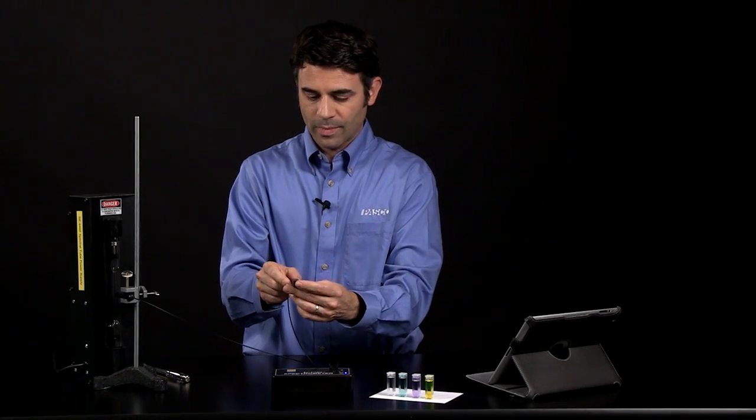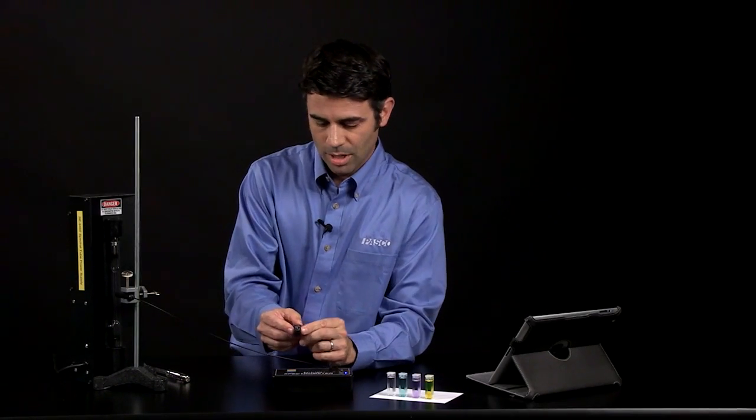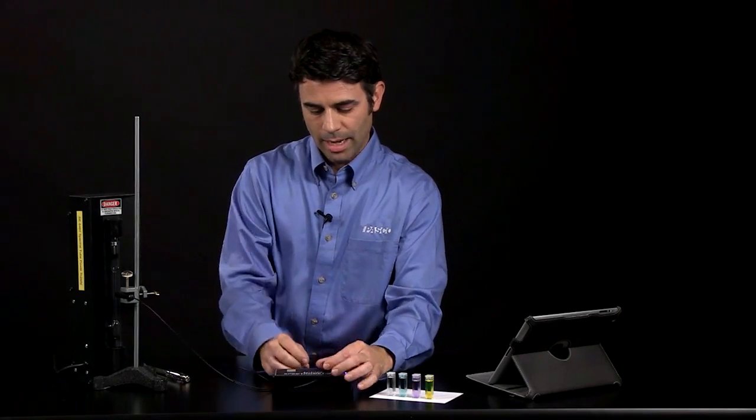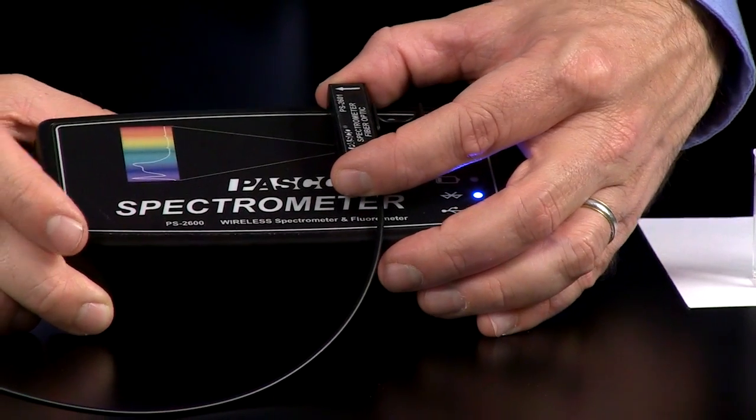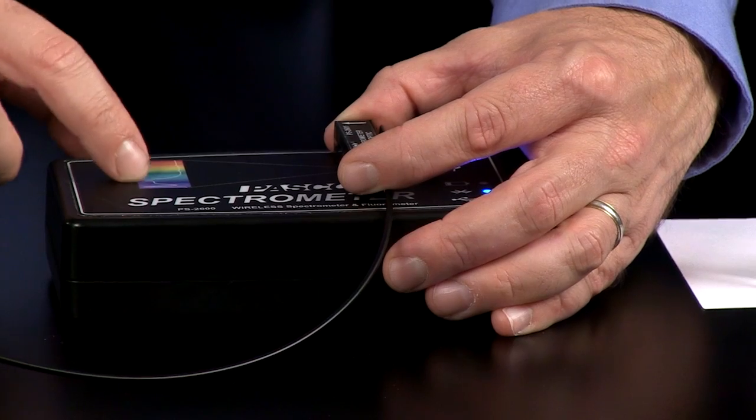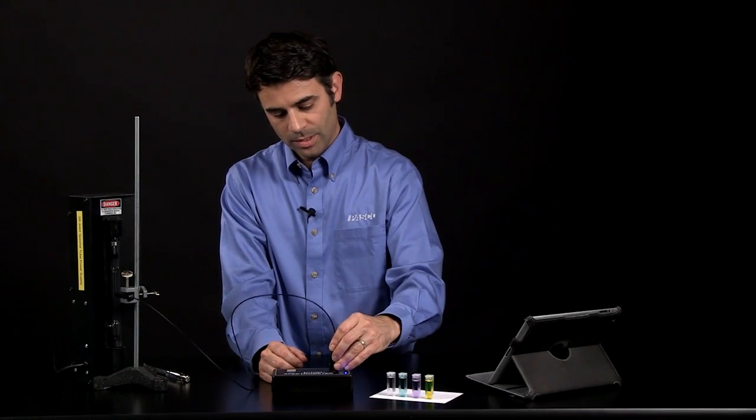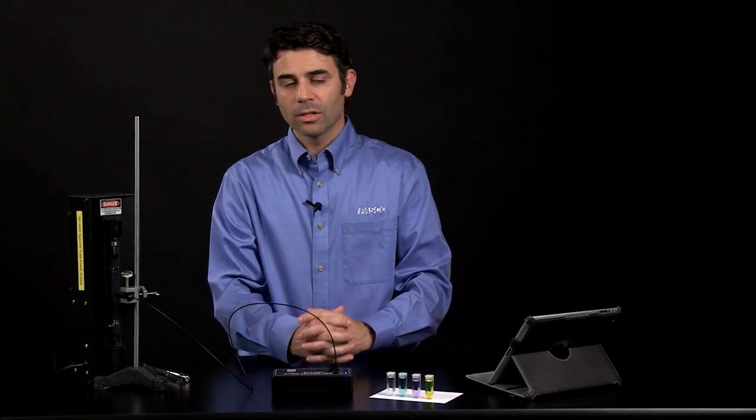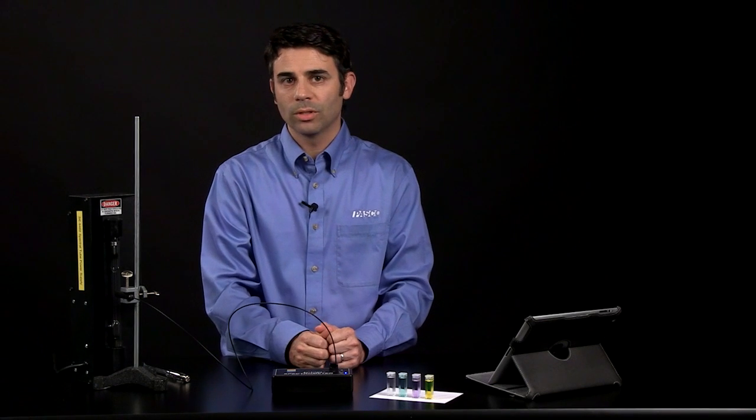The other end of the fiber optic accessory goes into the spectrometer. The arrows are going to be pointing towards the detector. That tells you how to line up the cuvette. I'll put this in. It's a very snug fit, so that it doesn't wobble around when you're doing your analysis.